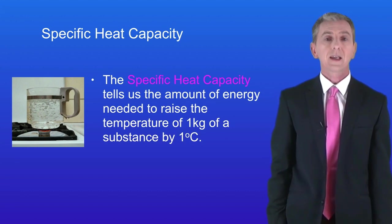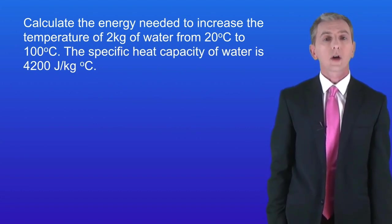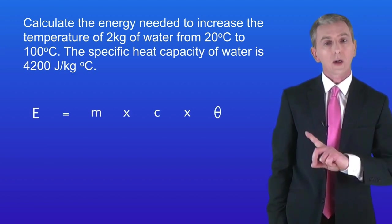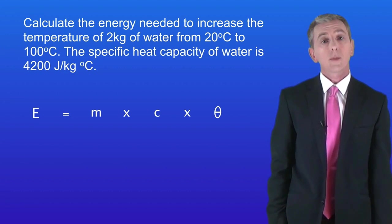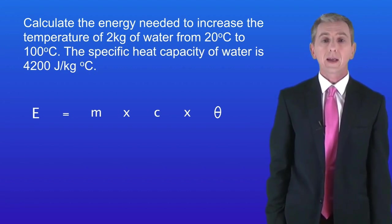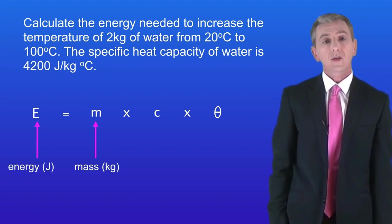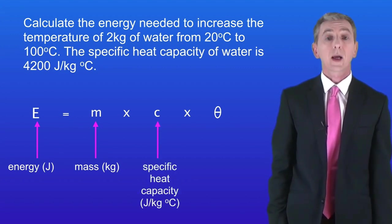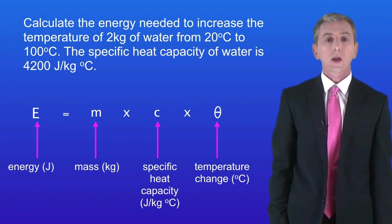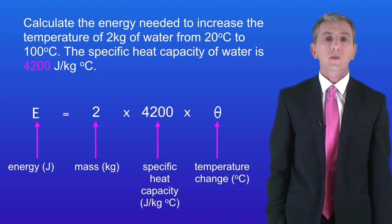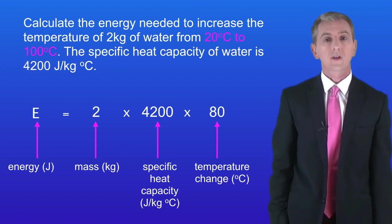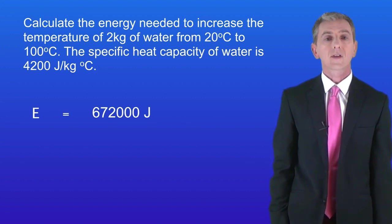Here's a question we're going to answer: calculate the energy needed to increase the temperature of two kilograms of water from 20 degrees Celsius to 100 degrees Celsius. To answer this question we use the following equation. The energy in joules equals the mass in kilograms multiplied by the specific heat capacity multiplied by the temperature change in degrees Celsius. You are given this equation in the exam, along with any specific heat capacity values you need. The mass is 2 kilograms. The specific heat capacity for water is 4200. The temperature changed from 20°C to 100°C, which means the temperature change is 80 degrees Celsius. This gives us a value for the energy needed of 672,000 joules.